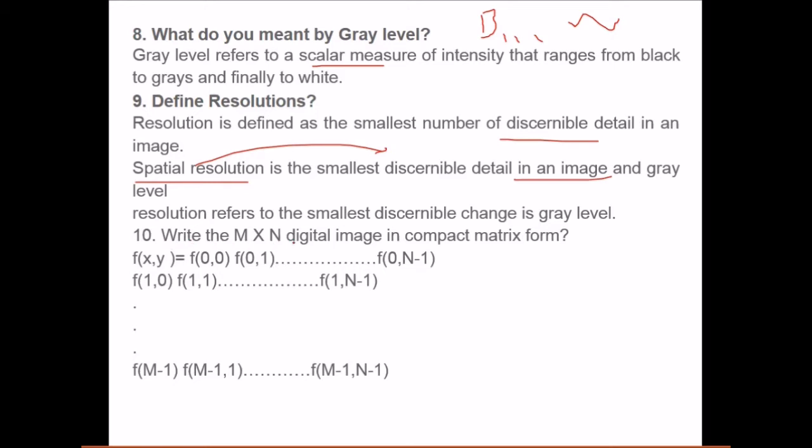Write M into N digital image in a compact matrix form. We have F(0,0) then you know we have F(0, N-1). This goes from zero because this is the first row. The first limit will be zero. The second variable will be changing, that is zero to N minus one. Here also the first will be changing. The other will remain same. That is the row is zero. First will change. And finally the last one will be F(M-1, N-1) because it is starting from zero.